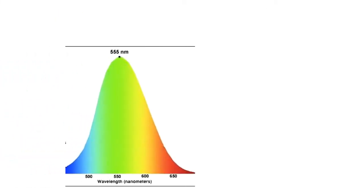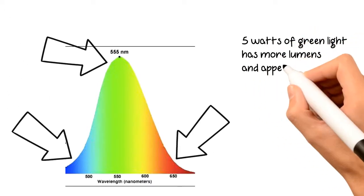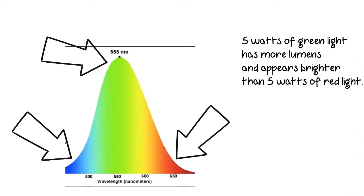The curve shows what humans see. The human eye is more sensitive to green and yellow than to blue and red. Five watts of green light has more lumens and appears brighter than five watts of red light.